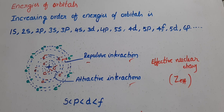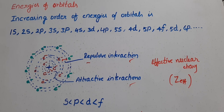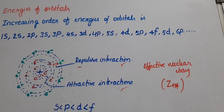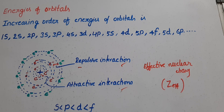S orbital has less energy. The order is S is less than P is less than D is less than F. If there are more attractive interactions, then this increasing order is justified.